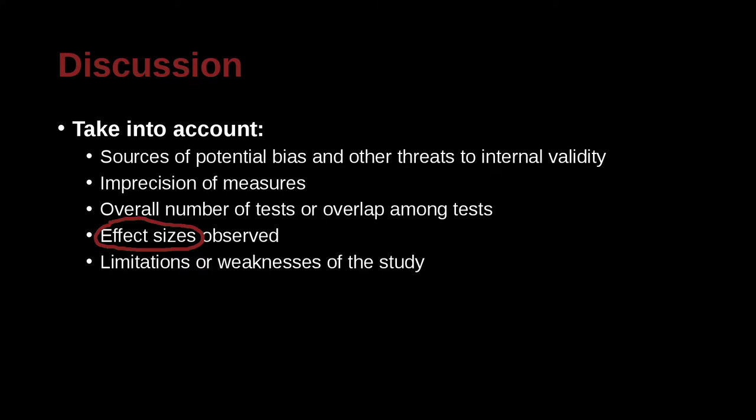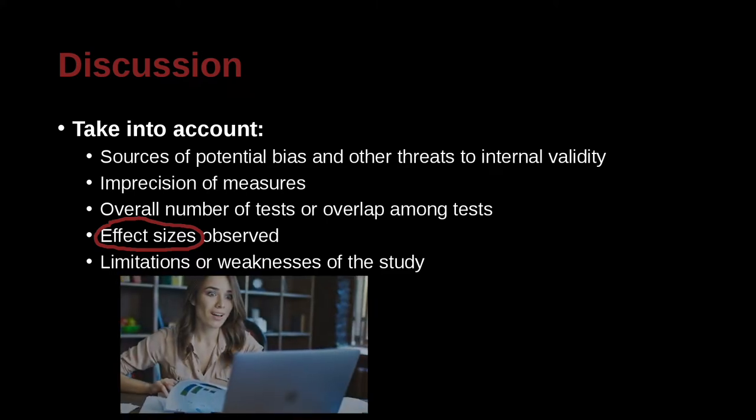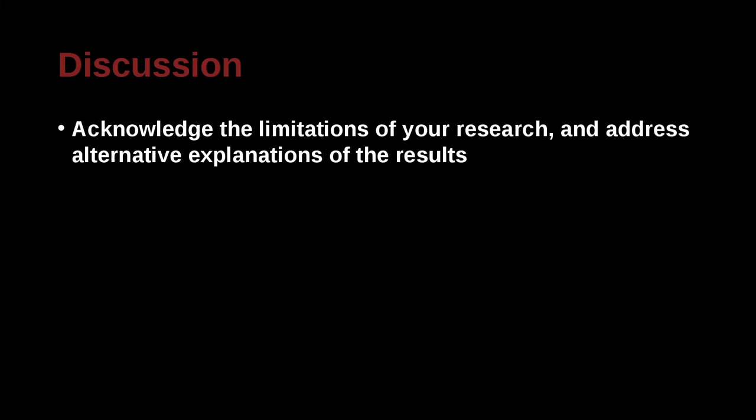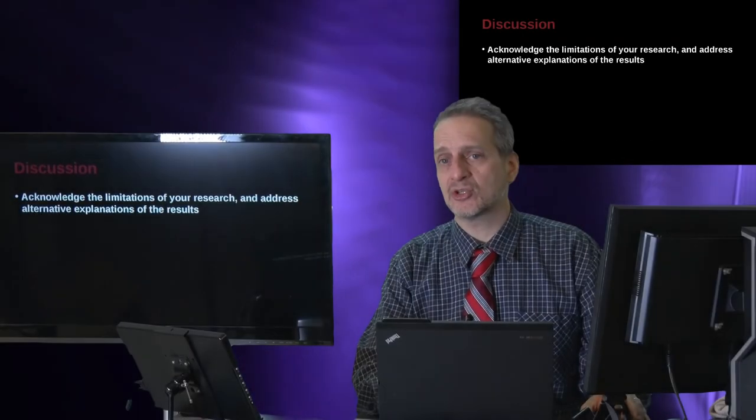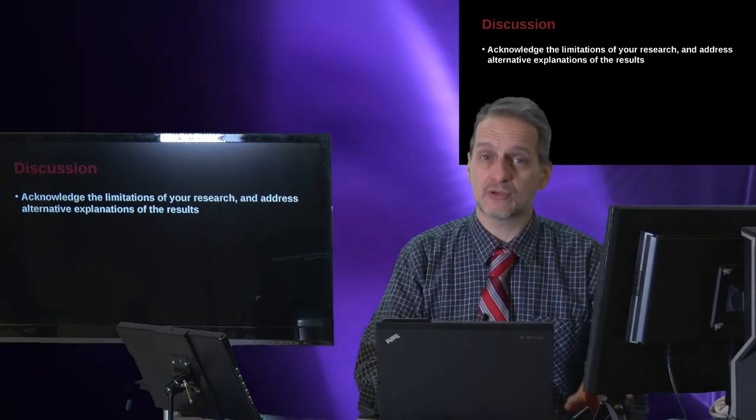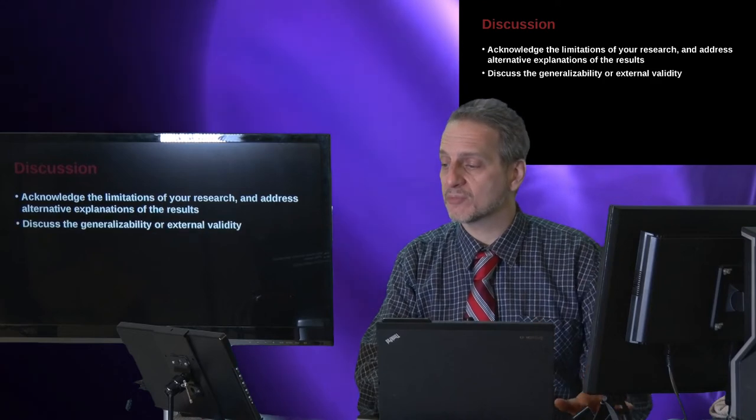Limitations, weaknesses, what were some things you could do better? What were some things that could have caused a problem in your discussion? That's something you didn't cover. Acknowledge the limitations of your research and alternatives. What are some other ways you could have done this research? Or in the future, maybe other researchers would like to do this research. What are some things they should be careful of?